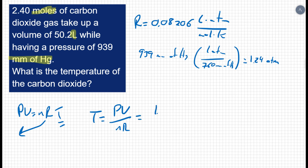PV, we just found to be 1.24 atmospheres. The volume is given to us as 50.2 liters. The number of moles is 2.4 moles. And R is 0.08206 liters times atmospheres over moles times kelvin.